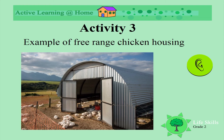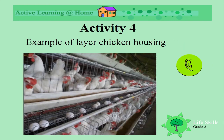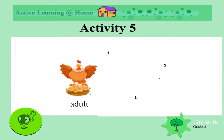This is an example of layer chicken housing. These chickens don't get to go out - they live in these little cages. What do you think it's like living in one of these? Would you rather be a free-range chicken or one living in a layer house, one layer on top of the other?